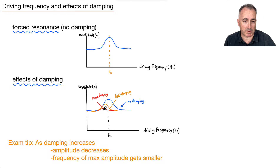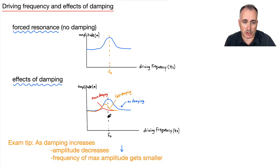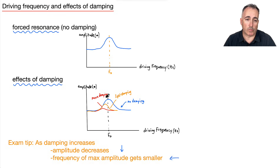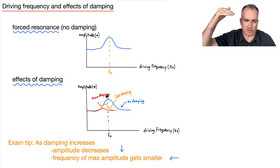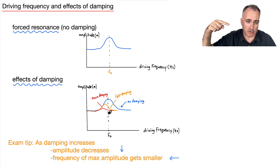Do you notice what happens to the shapes of these curves as you do more and more damping? As your damping increases, your amplitude decreases — it goes down and down. And your frequency of your maximum amplitude — this peak right here — do you notice it's shifted to the left? In other words, that frequency goes to the left. The more you damp something, the lower the maximum amplitude is, which makes sense since more friction shouldn't allow as much amplitude. But what's interesting is that it also changes the frequency — the natural frequency of a system actually shifts to the left.